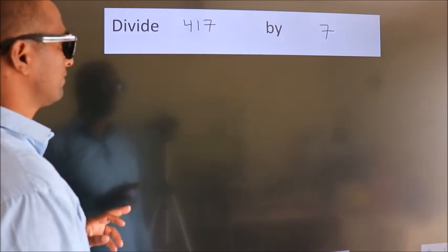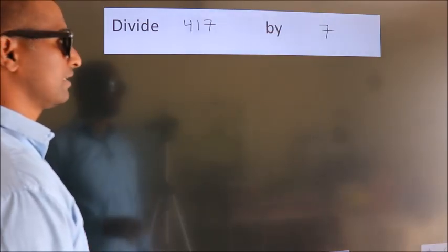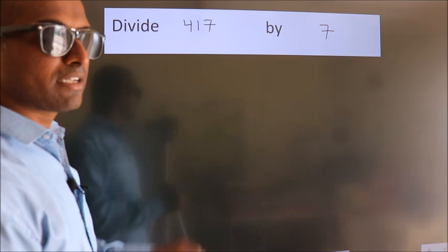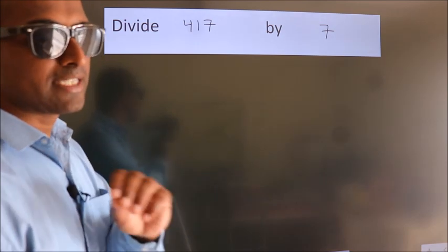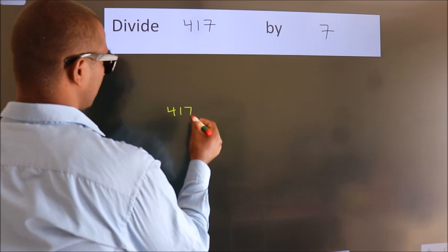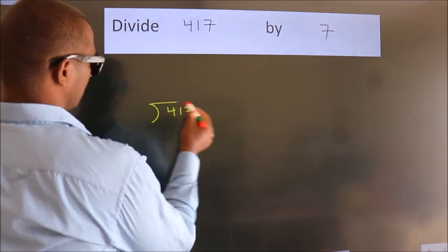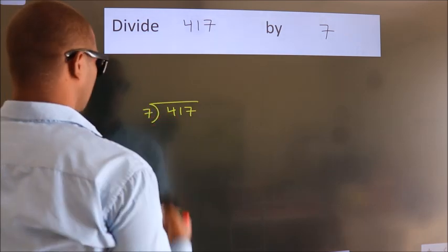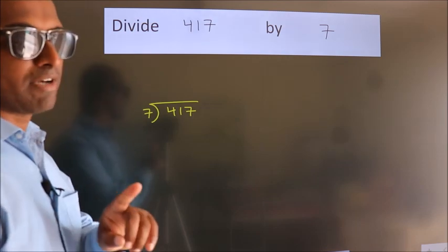Divide 417 by 7. To do this division, we should frame it in this way. 417 here, 7 here. This is your step 1.